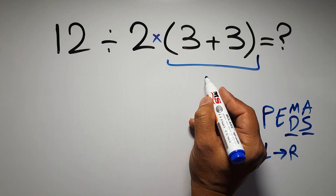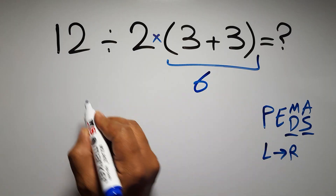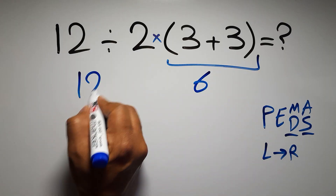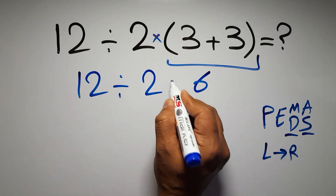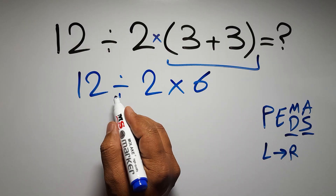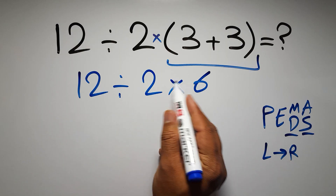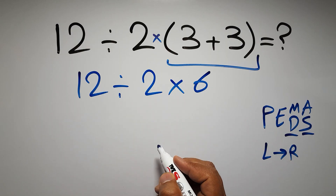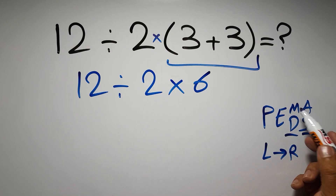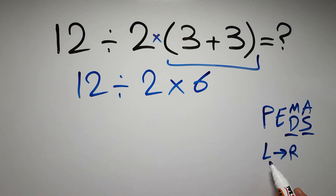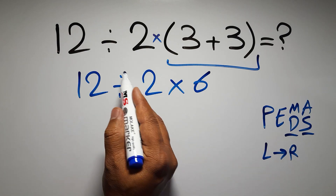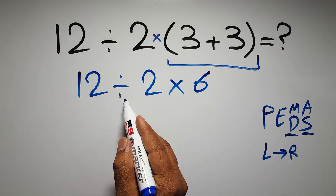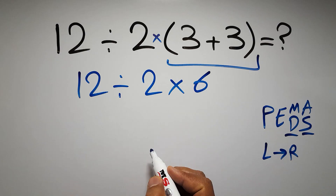So first these parentheses: 3 plus 3 gives us 6, so 12 divided by 2 times 6. Now we have one division and one multiplication. Multiplication and division have equal priority and we have to work from left to right, so first we have to do this division, then this multiplication.